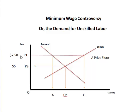So at a price of $7.50 — a wage of $7.50 — you shoot your arrow across and this is how much labor would be ready, willing, and able to be supplied. It would be quantity OC.